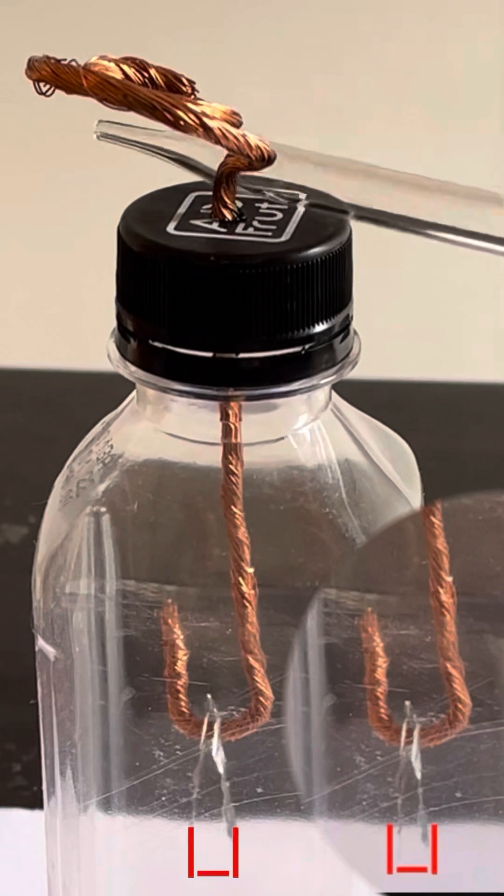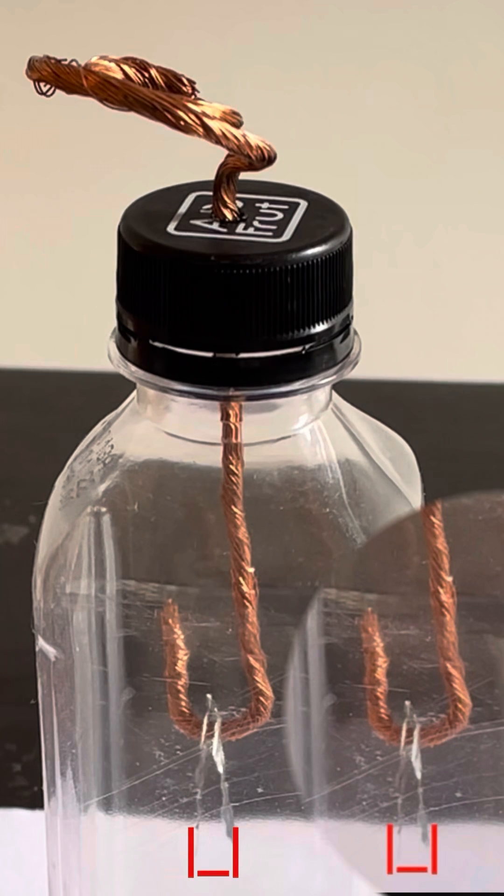A glass rod is rubbed with silk for enough time and it is brought and touched on the head of the electroscope.